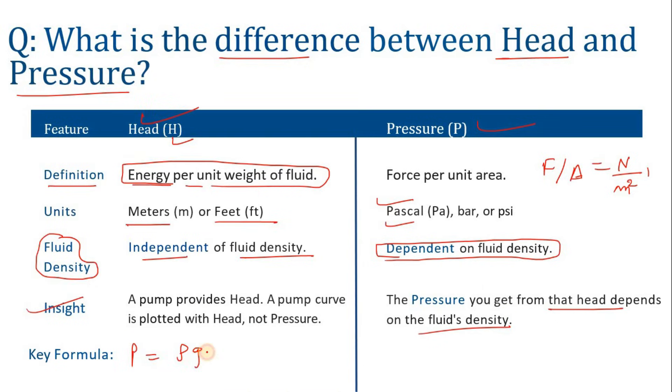Now this head is independent of the density. So let's suppose if you have 30 meter head, whether you use oil or any other fluid, that pump can lift the fluid 30 meters. But when we calculate the pressure, density will come into the picture. Density can vary with respect to fluid. That's why it is said that pressure is dependent on the fluid density but head is not.